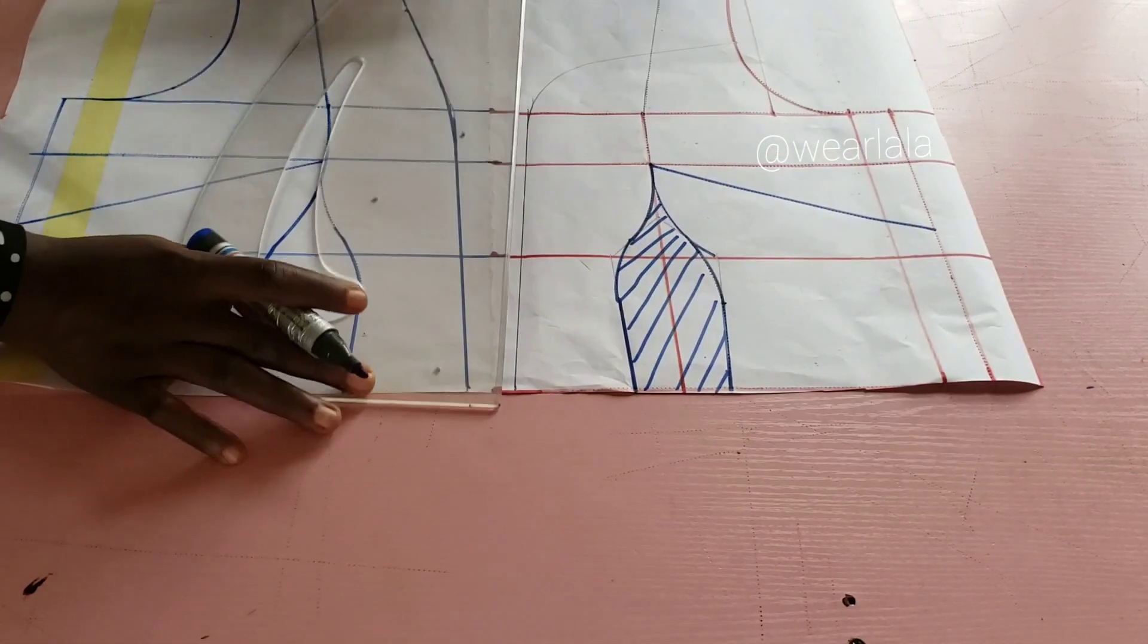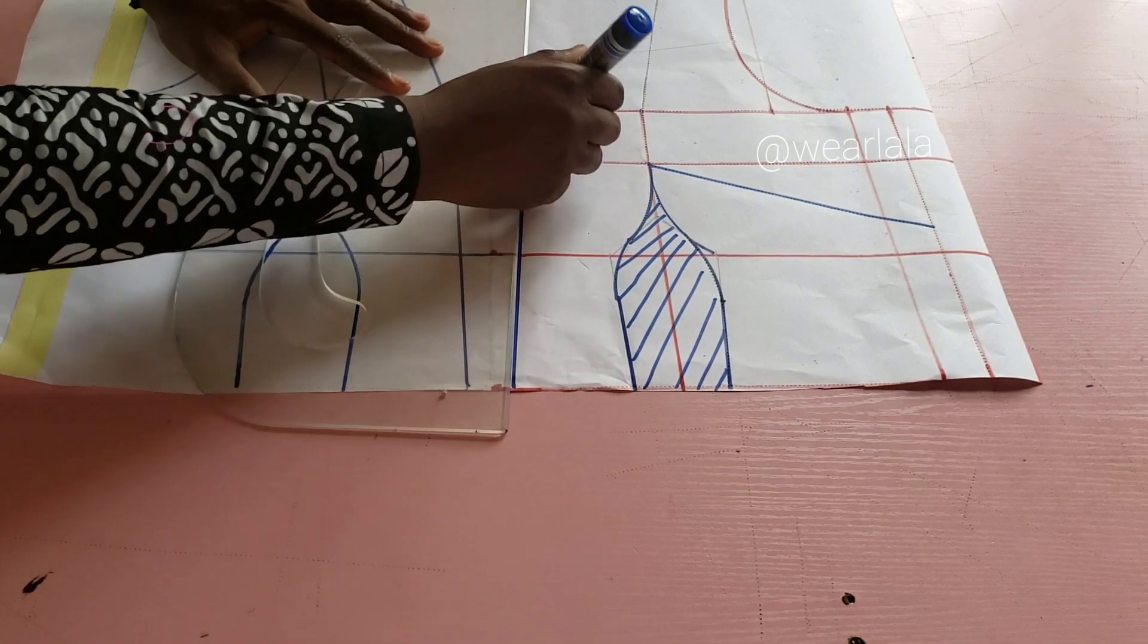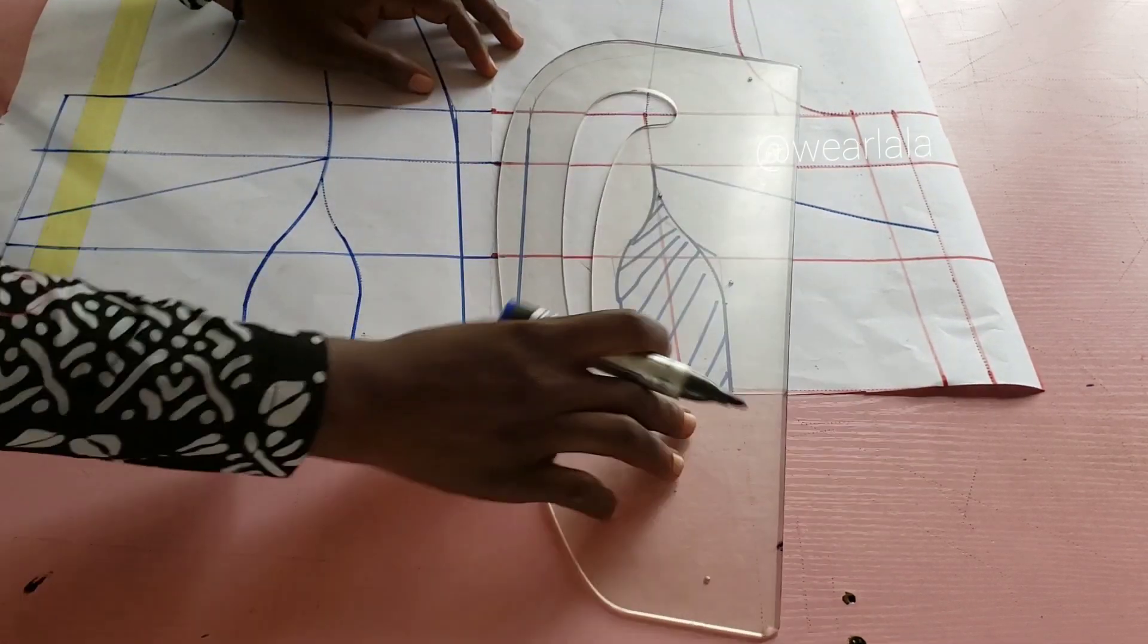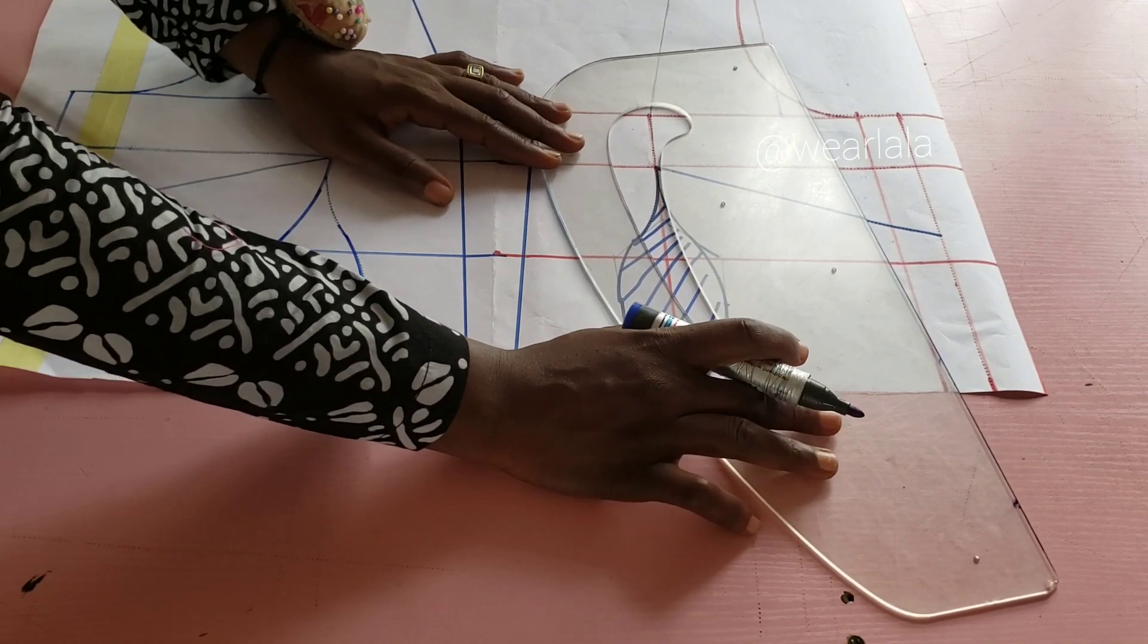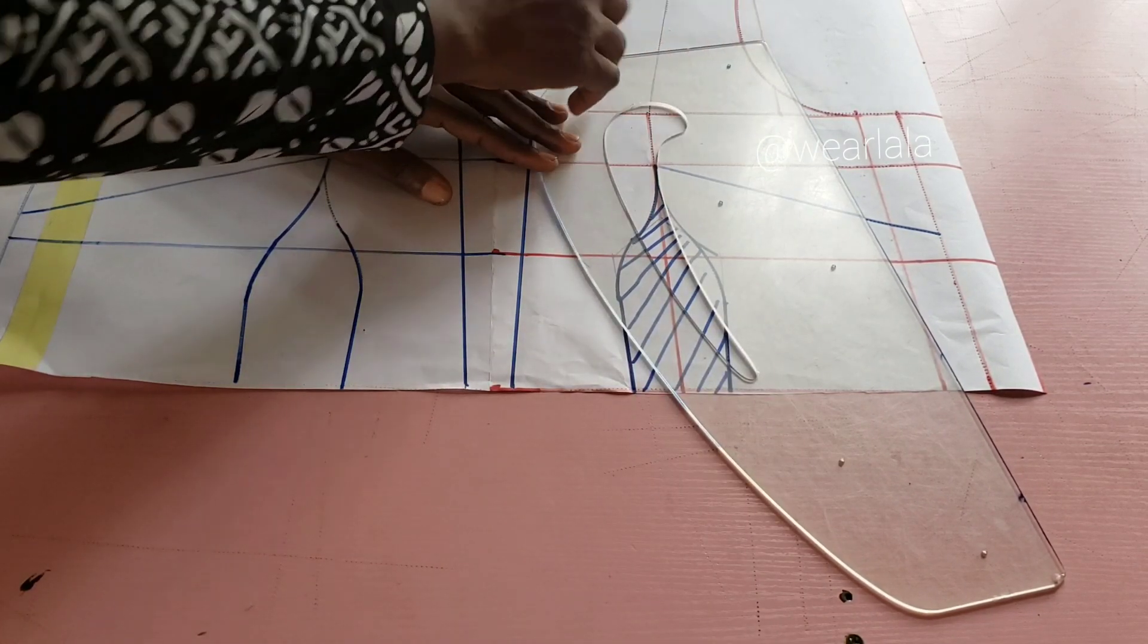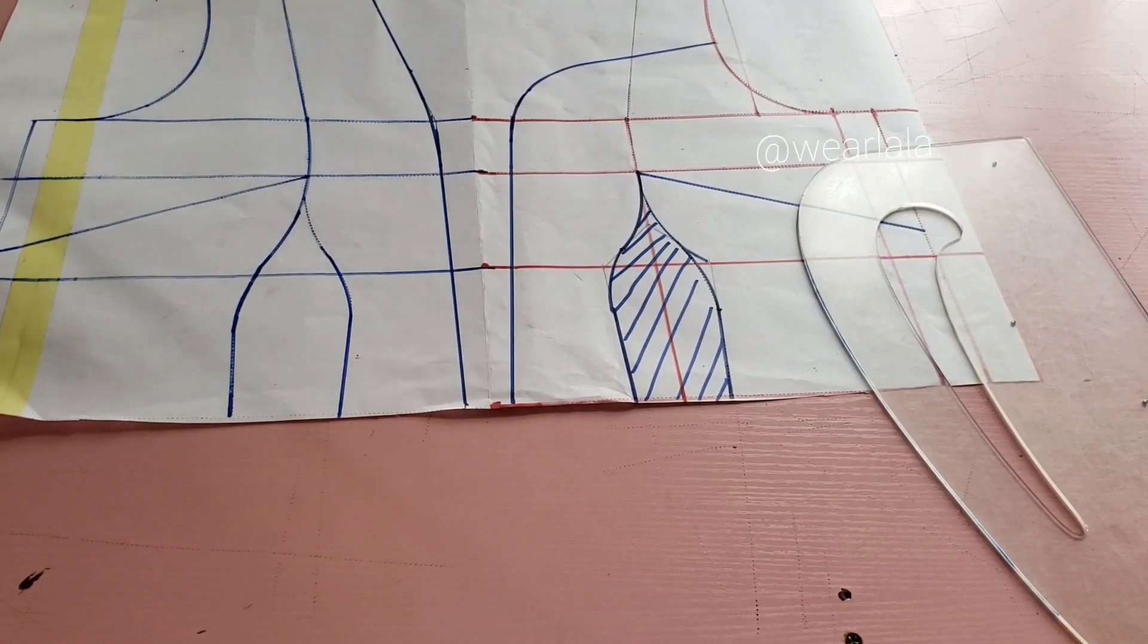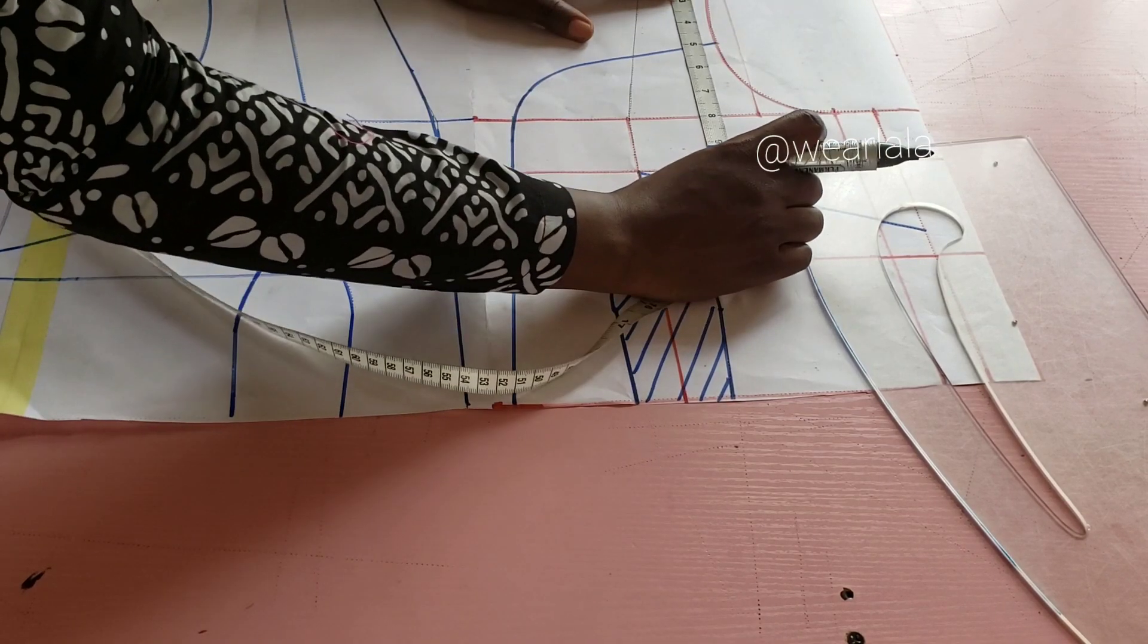Then the other side that has the off-shoulder, I'll connect it like this. Then I'll also use the curved part of my ruler like so to link it to the six-inch marker I used to come down from the shoulder line. So one side is off-shoulder, the other side is a normal shoulder.